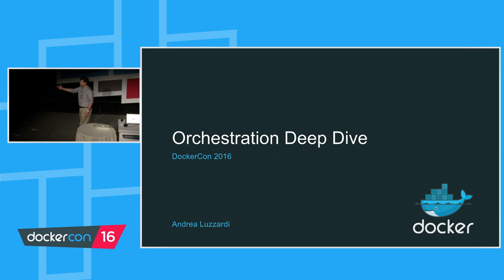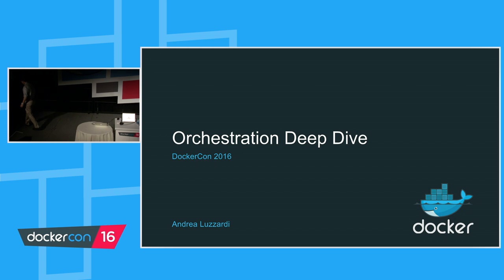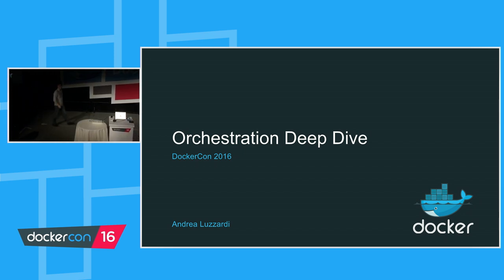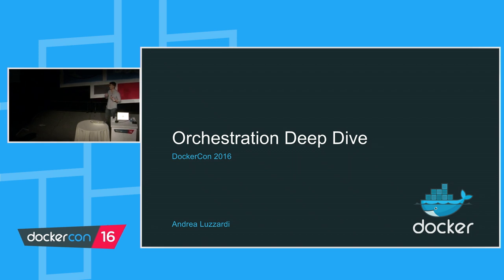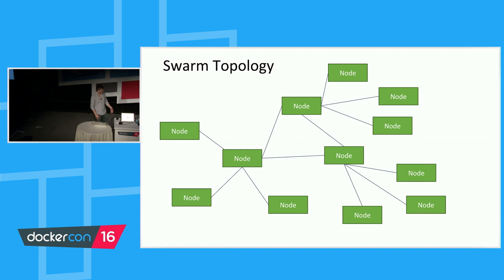That concludes the user perspective section. Now Andrea will cover the architecture. Hey everyone — Mike just showed the main features in Docker 1.12. Even though they look simple, what's going on on the backend is quite complex. Here's a swarm topology: you have a bunch of interconnected nodes and it just works. Let's go one level deeper.